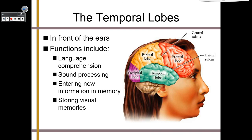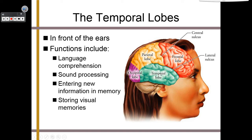Your temporal lobes are in the front of your ears, right by your temples. They help you understand language comprehension, process certain sounds, and are involved in memory — entering new information into memory and storing visual memories. So they'll take information from the occipital lobe and store it, for example, so you remember what your mom looks like. If you can recognize partial images — like half a phone, scissors, a table leg, or a ball cap — that's because your temporal lobes store memories of what those things look like when whole.